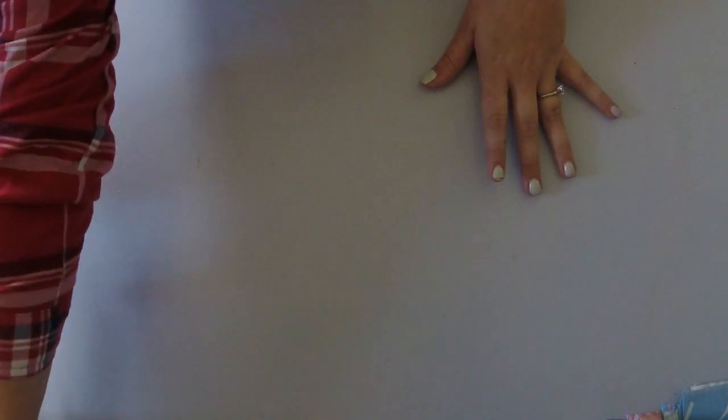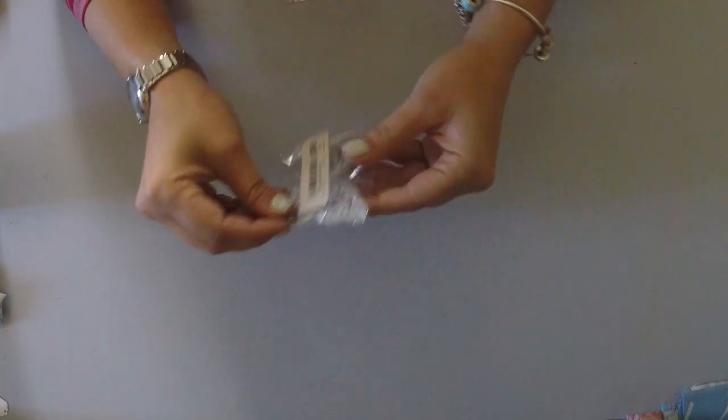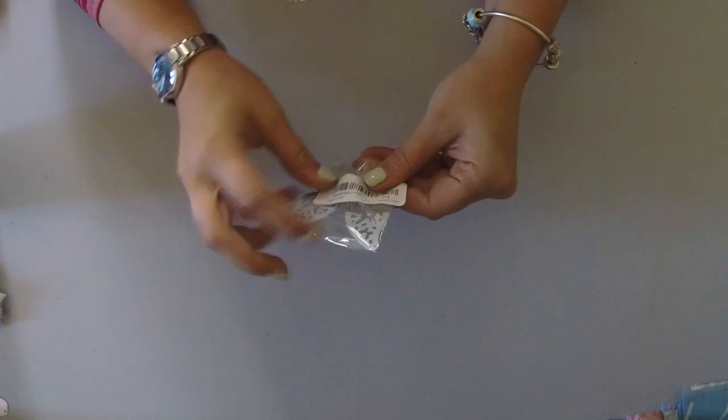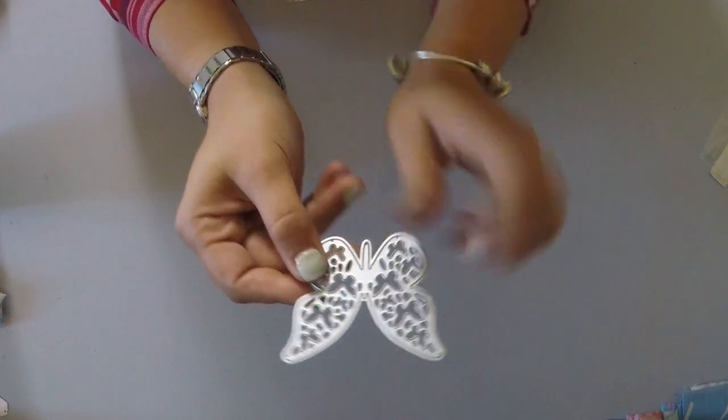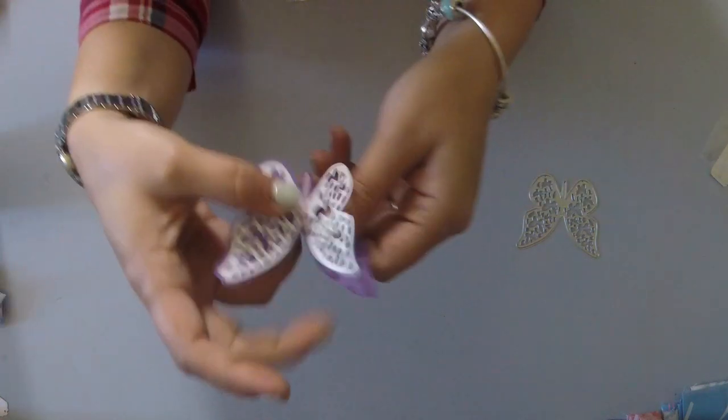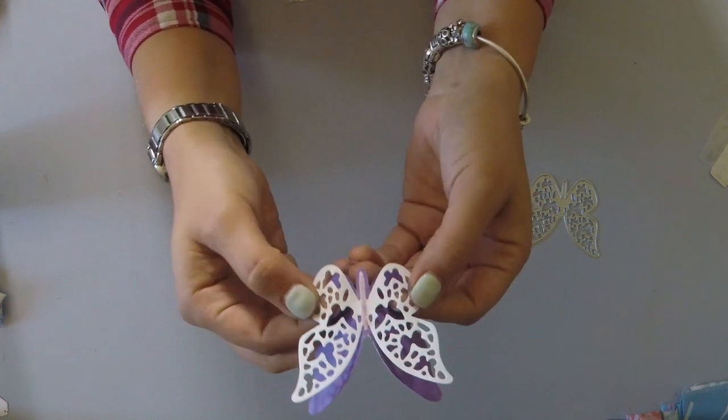So let's start off with the dies. I have picked up quite a few of them over the past couple of weeks and so they've all arrived. Start off with this adorable butterfly. If I can get the packaging open here. Oh there we go! So it's this little butterfly and it cuts out this adorable little die.